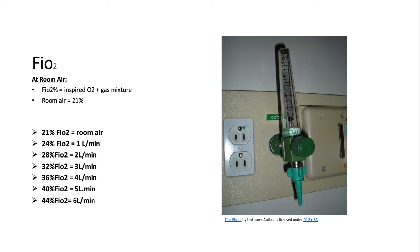FiO2 is the fraction of inspired oxygen in a gas mixture. At room air it equates to 21% — what a patient inhales without supplemental oxygen. Once we add oxygen from a flow meter, it's converted to 24% FiO2, which equates to one liter per minute. This criteria is specific for nasal cannula, and you will notice that the FiO2 increases by 4% with each liter of oxygen added. So 28% FiO2 equates to two liters per minute, and so forth.